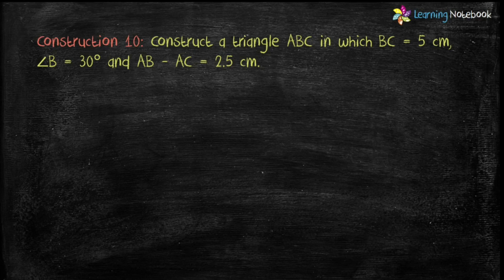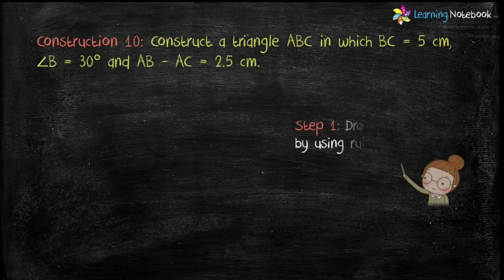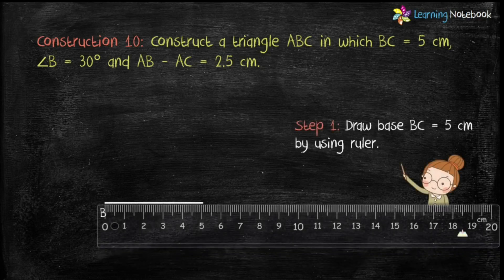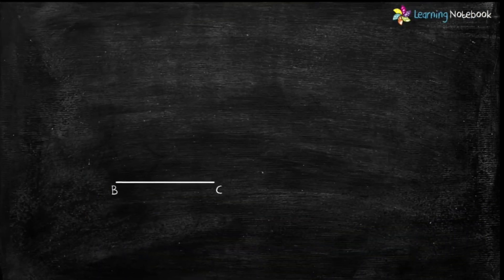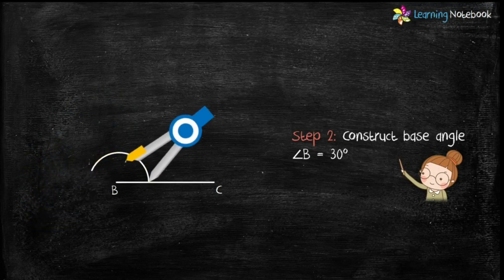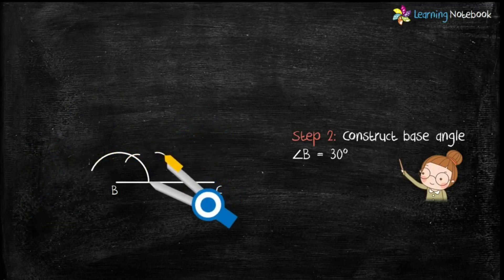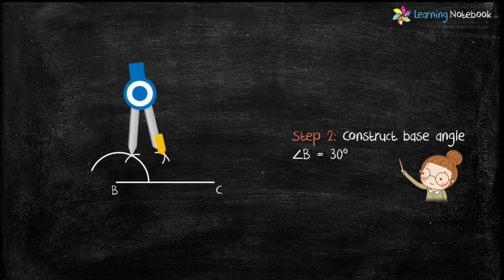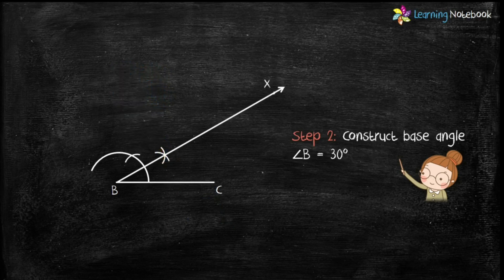Step 1 is to draw base BC equals 5 centimeters with the help of a ruler. Step 2 is to construct base angle B equals 30 degrees. Students, you may refer to Part 4 of this chapter to learn the step-by-step construction of an angle of 30 degrees.